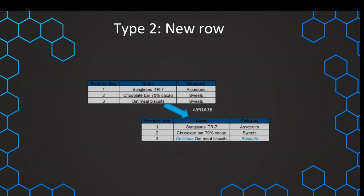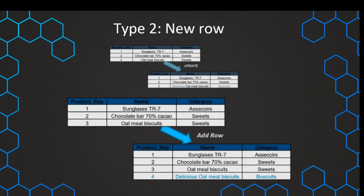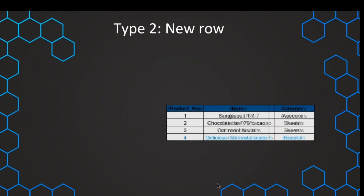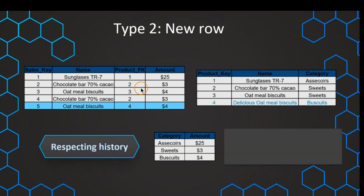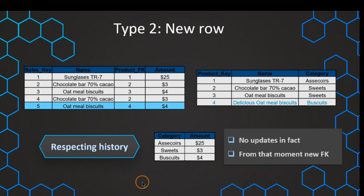Now let's have a look at how this is implemented. With Type 1 we just overwrite the values, but now whenever there's a change, we don't want to touch the previous value in our dimension — instead, we want to add an additional row. This additional row has an additional primary key in our dimension and just contains the updated value. In the fact table, it's also very simple: from now on, we just use that new foreign key from this dimension. We use for this product oatmeal biscuits only the new foreign key, and with that we don't need to make any changes or updates in the fact table.